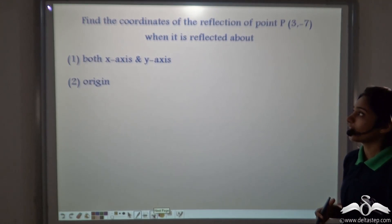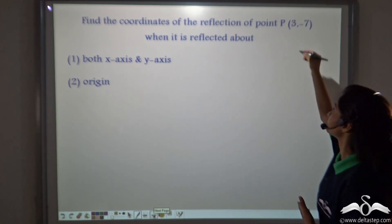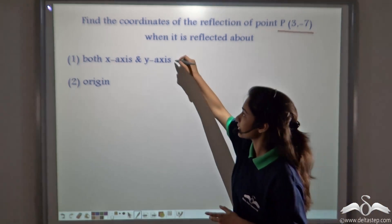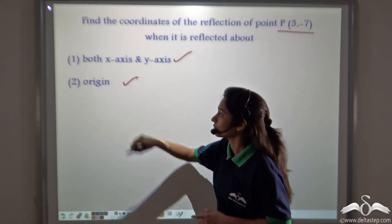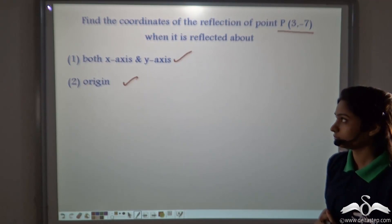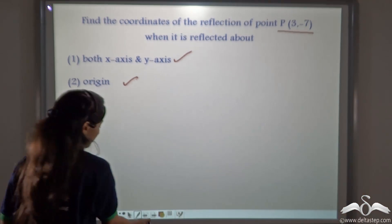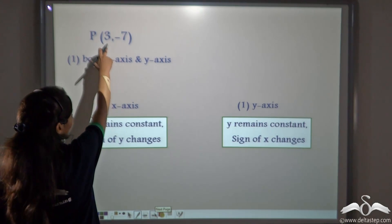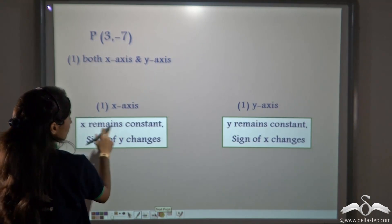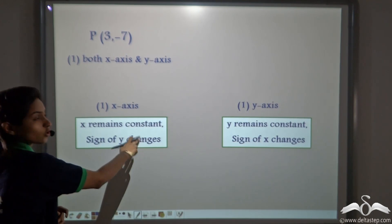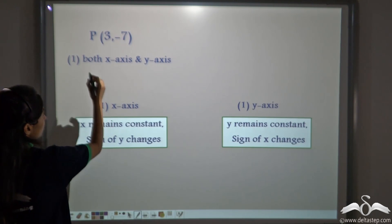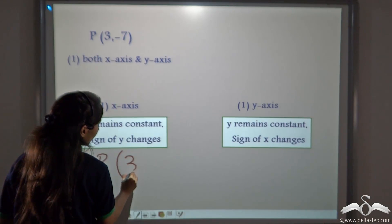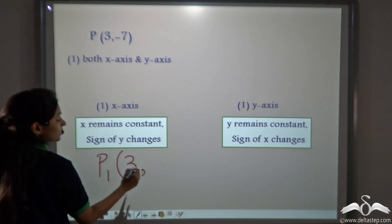Do this sum: find the coordinates of the reflection of point P(3, −7) when reflected about the x-axis, y-axis, and origin. When a point is reflected on the x-axis, x remains constant while the sign of y changes. So P1: x stays as 3, and minus 7 becomes 7. So P1 is (3, 7).